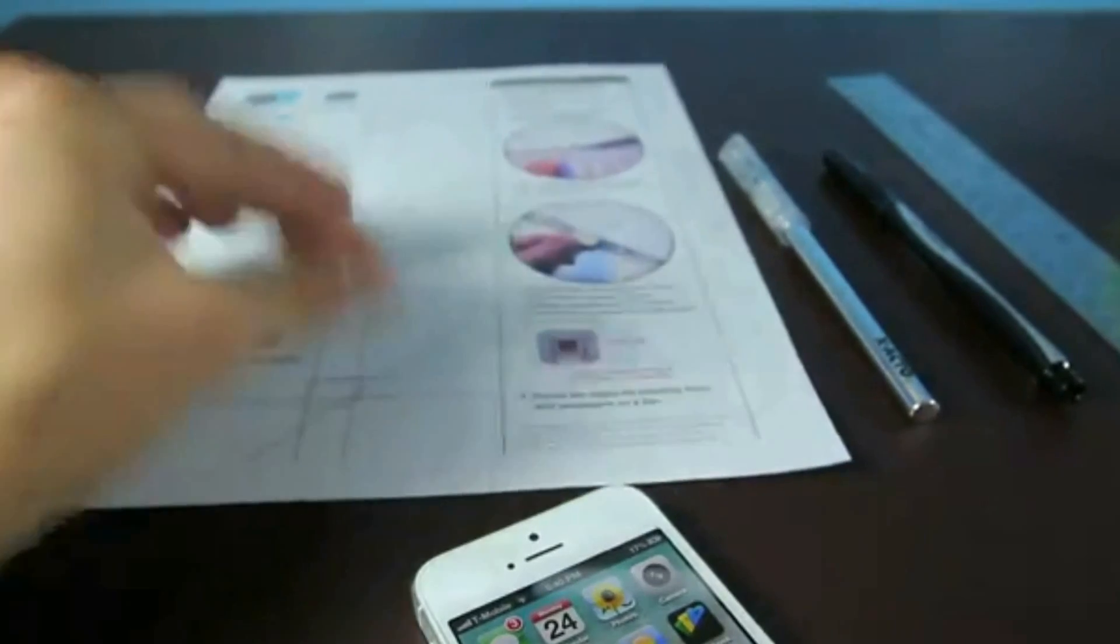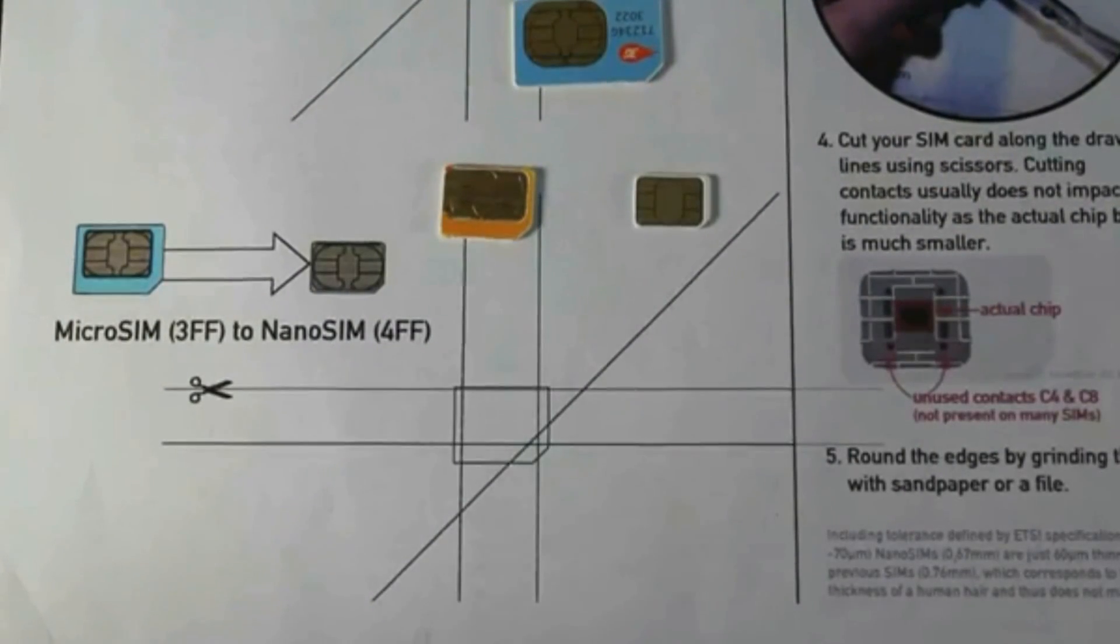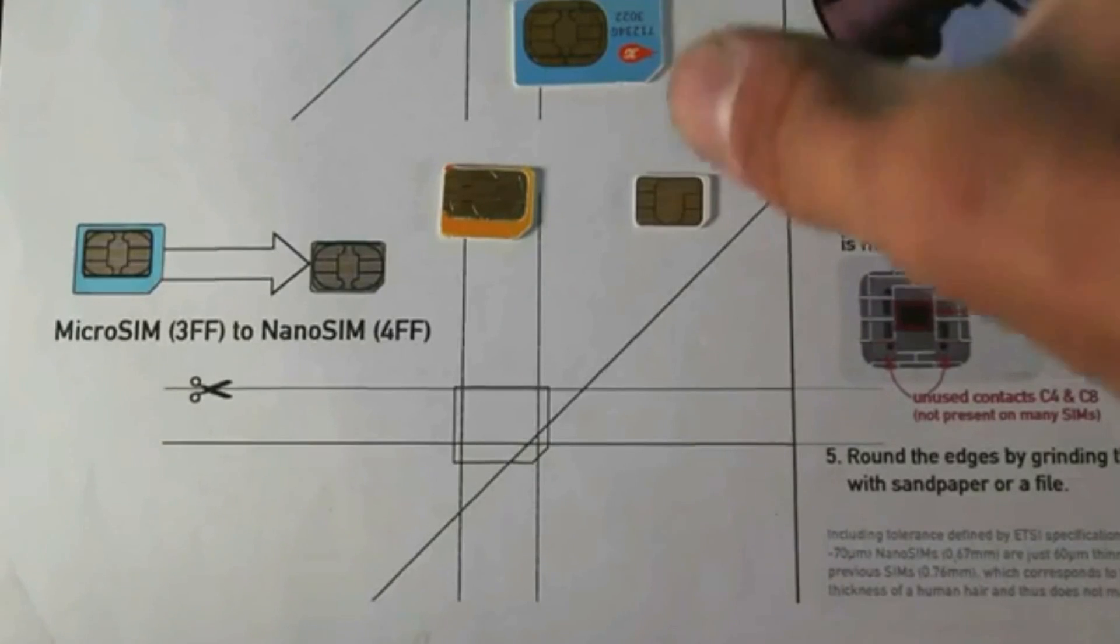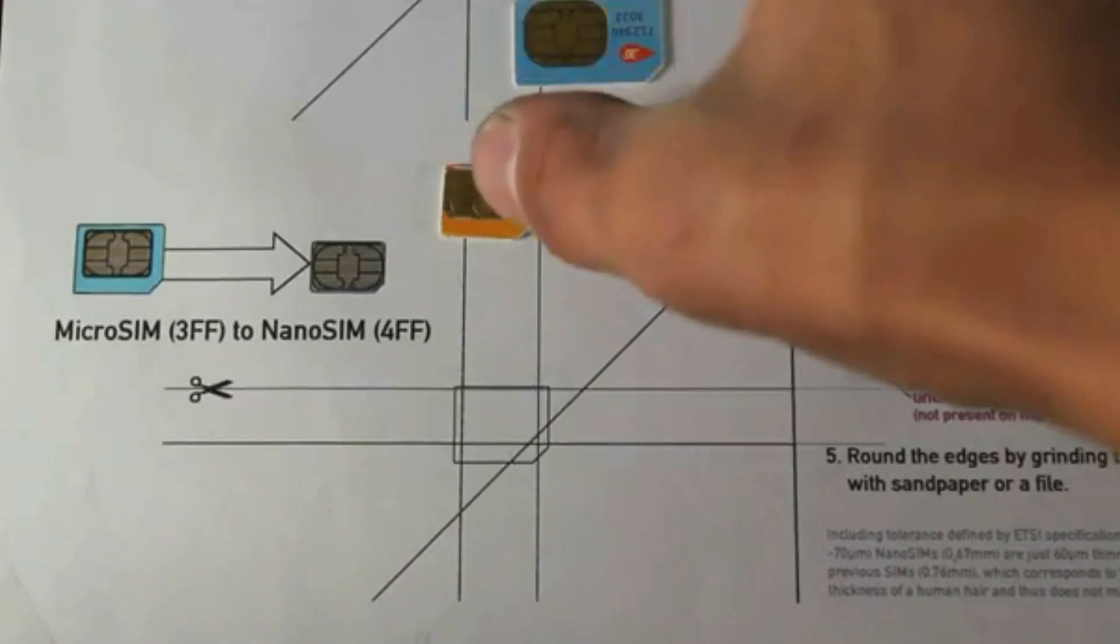Once you have all of that, let's begin. I did want to say that this sheet of paper actually allows you to cut your SIM card either into a nano SIM or into a micro SIM, or a micro SIM into a nano SIM—whatever you want, this sheet supports it.